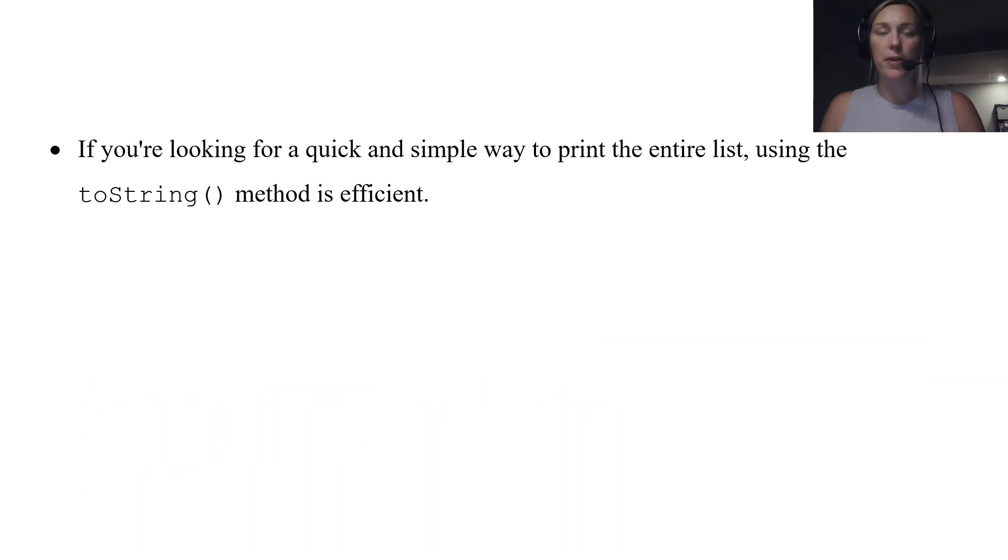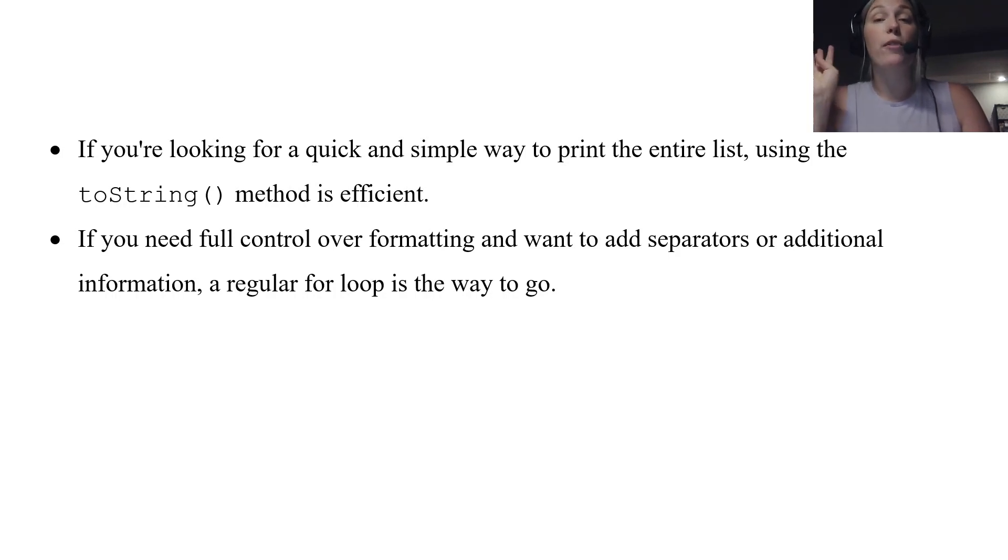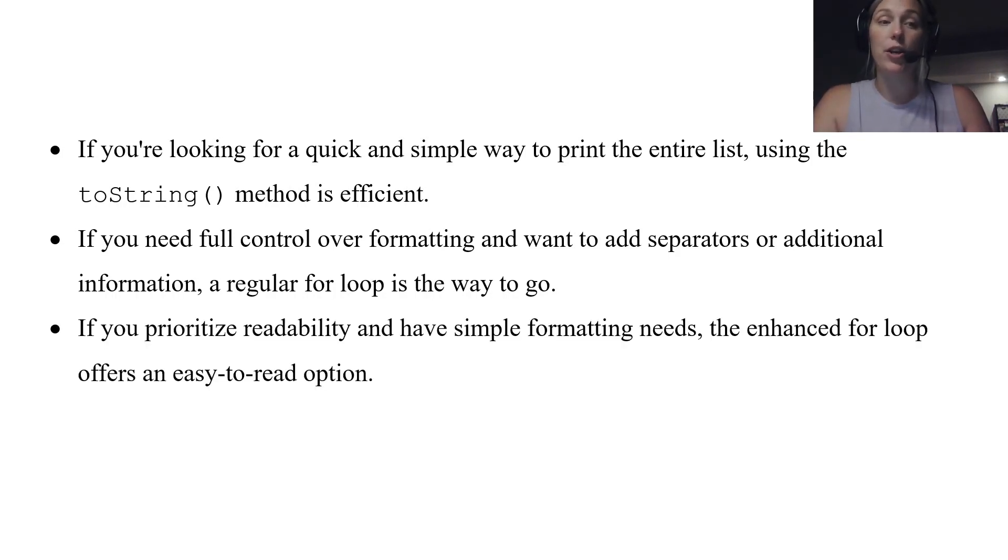And then the last couple of points I want to make here before the end of the lesson, if you're looking for a quick way to print the entire list, maybe just to check the contents or just to display what's in there, use the toString method. It's very efficient one line of code. If you need full control over formatting, and like you want to add special separators like tabs, new lines, or certain words that go along with your array list, a regular for loop is the way to go. If you enjoy readability in your code and your formatting needs are pretty straightforward, the enhanced for loop is also an easy to read option too.